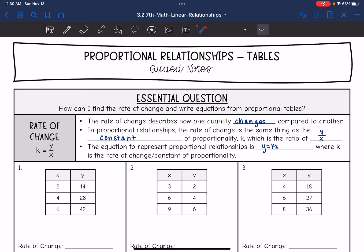The rate of change describes how one quantity changes compared to another. In proportional relationships, the rate of change is the same thing as that constant of proportionality k, which is the ratio of y divided by x. The equation to represent the proportional relationship is y equals kx, where k is the rate of change or the constant of proportionality.